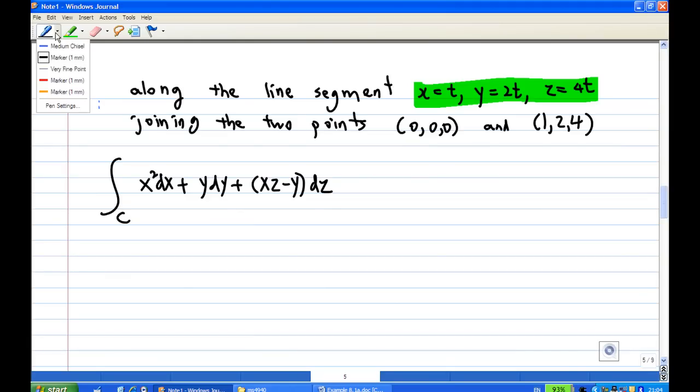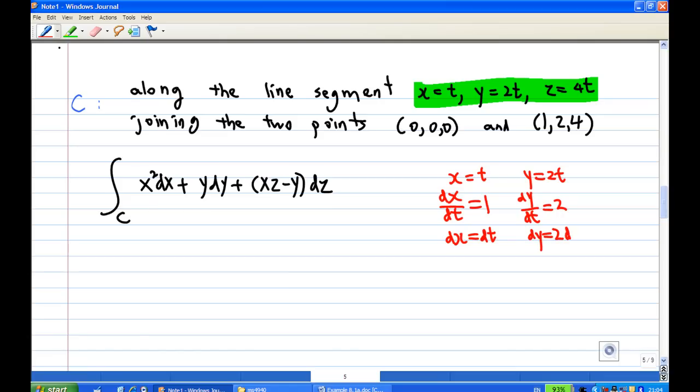First of all, I know that x is equal to t. So if you differentiate x with respect to t, you get dx dt equal to 1 or dx equal to dt. And then we know y is equal to 2t. So dy dt is equal to 2 or dy equal to 2 dt.